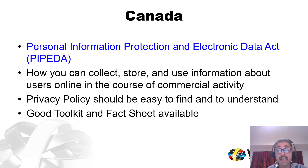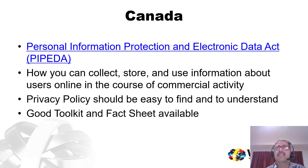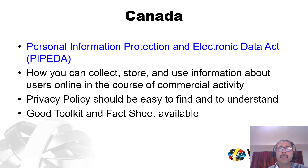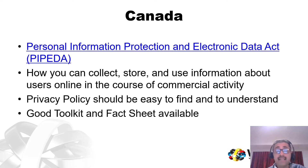A personal favorite is Canada because they have the Personal Information Protection and Electronic Documents Act, or PIPEDA. It governs how you collect, store, and use information about users online in the course of commercial activity — it specifically mentions commercial activity. According to this act, if you are a Canadian entity, you must make information regarding your privacy policies publicly available to all customers. The privacy policy should be easy to find and understand and be as specific as possible about how the entity collects, handles, and uses information. They also provide a very good privacy toolkit and fact sheet on the Office of the Privacy Commissioner of Canada — it's a document well worth reading.